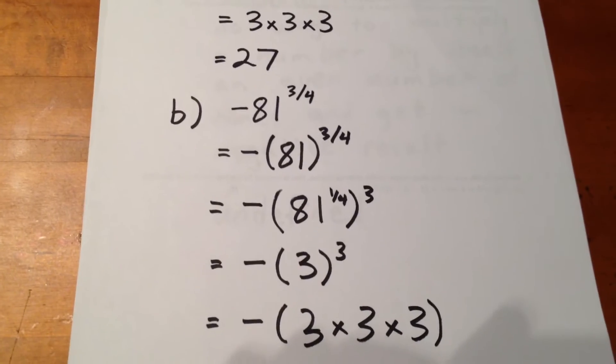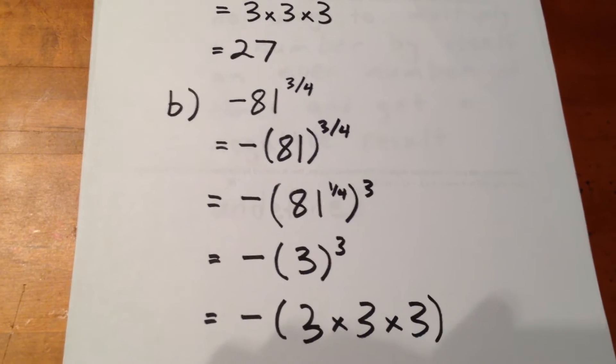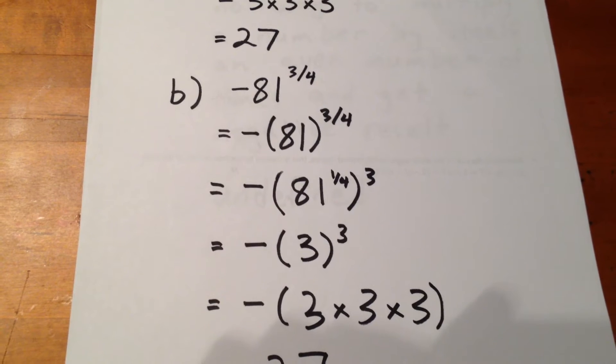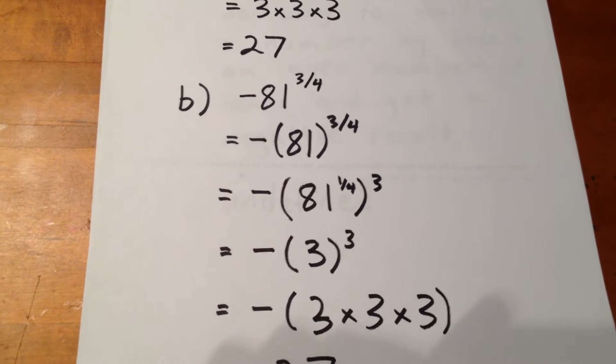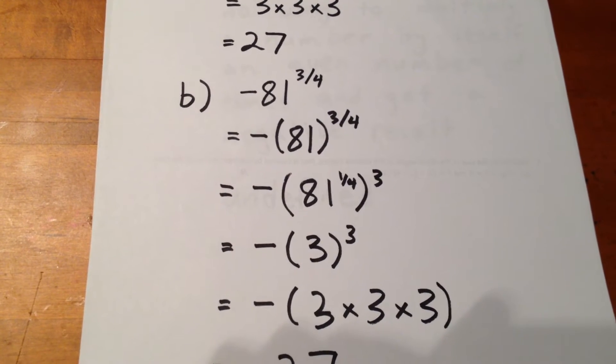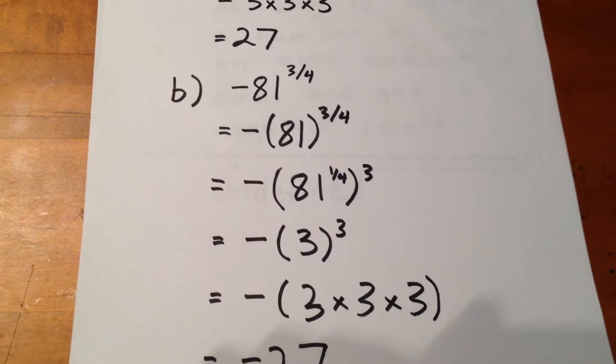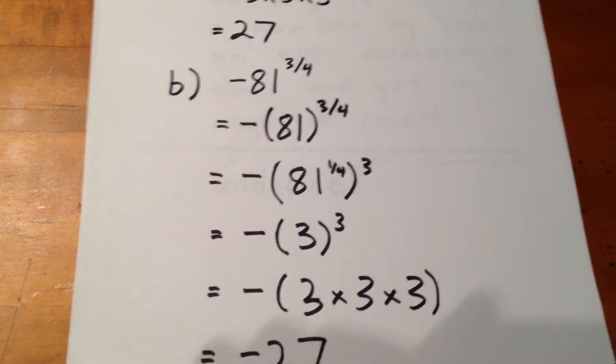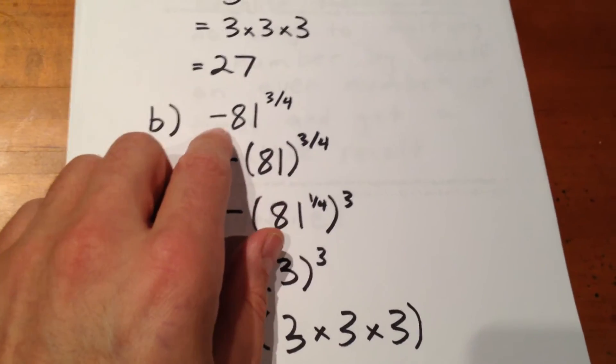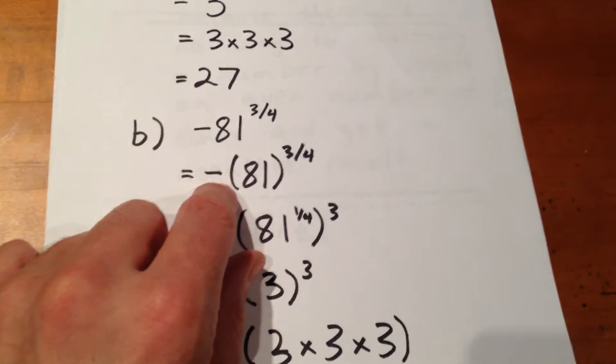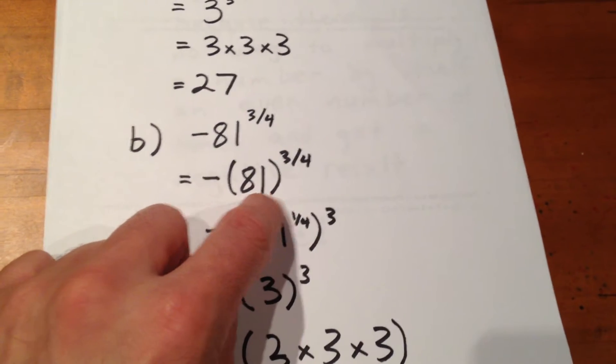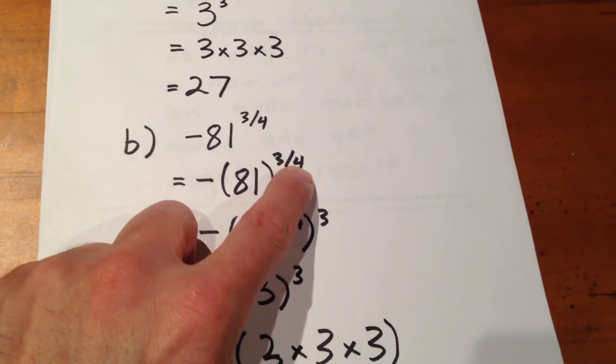In the next question, we want to evaluate negative 81 to the exponent 3 quarters. Well, that negative sign is not part of the base. The base in this case is merely 81, it's not negative 81. When the negative sign is not part of the base, we can leave it outside and think of our question as simply 81 to the 3 quarters.